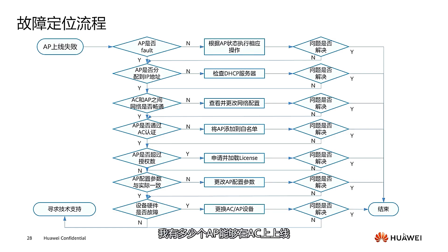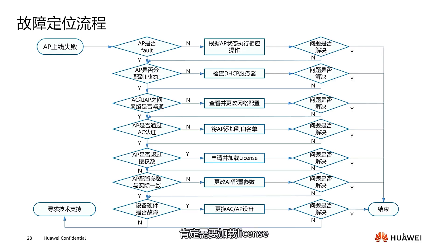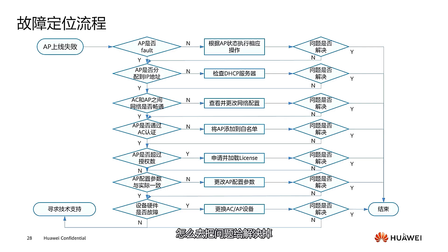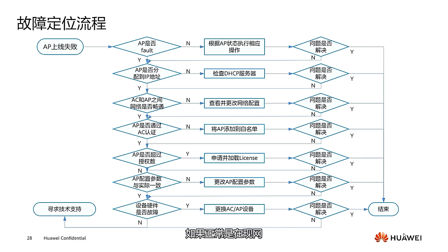Next, check if the AP has exceeded the license number — there are requirements for how many APs can be onboarded to the AC. If the limit is exceeded, you need to load a license. Then check the AP configuration parameters to see whether they match the actual deployment. Making configuration mistakes is normal; it's about how you resolve the issues after making them.